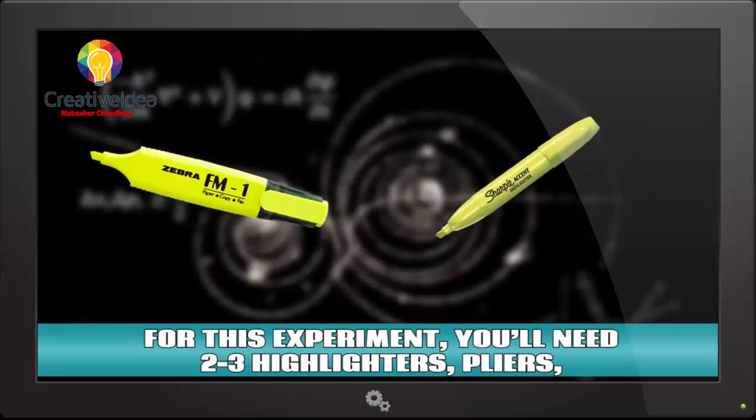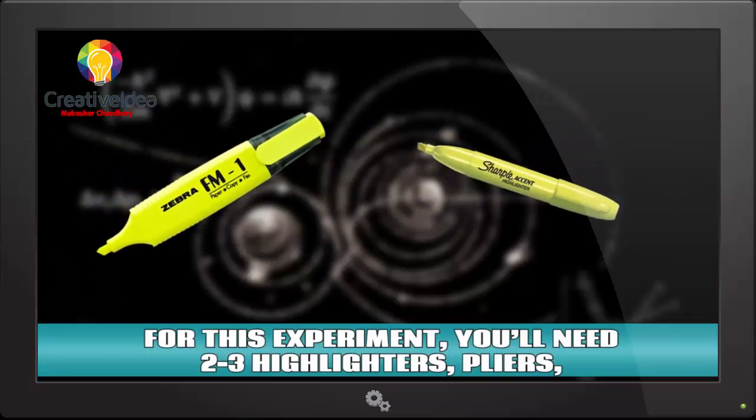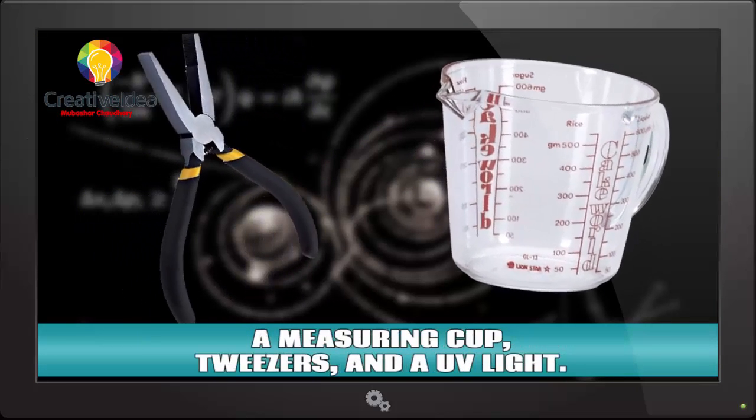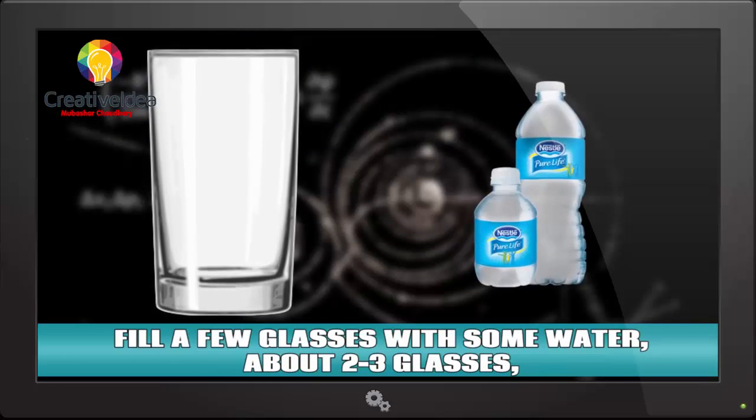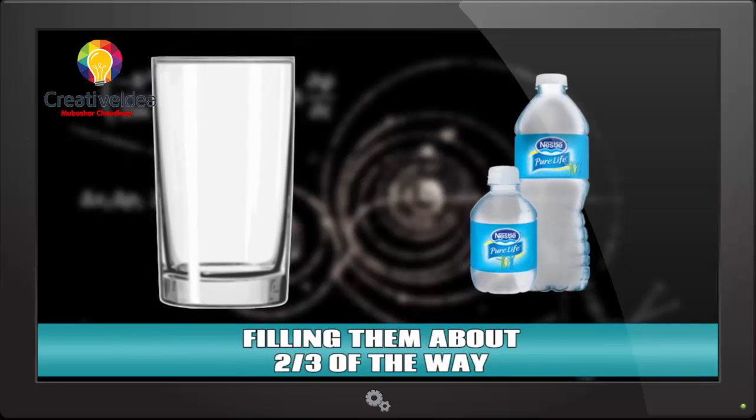Glow water. For this experiment you'll need 2 to 3 highlighters, pliers, a measuring cup, tweezers, and a UV light. Fill a few glasses with some water, about 2 to 3 glasses, filling them about two-thirds of the way.